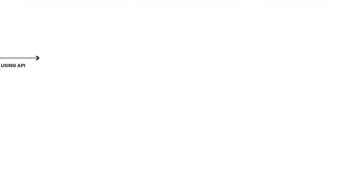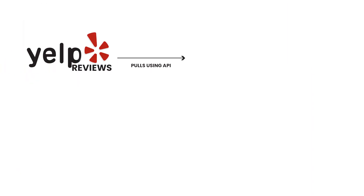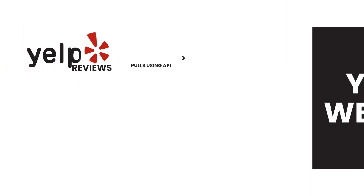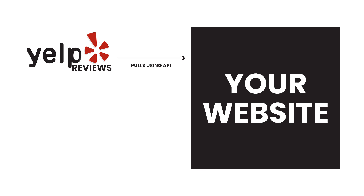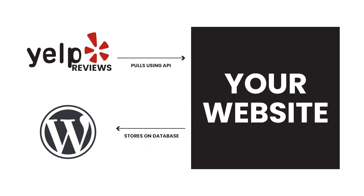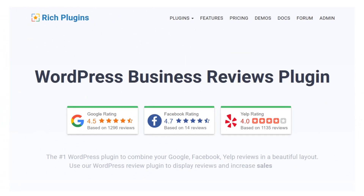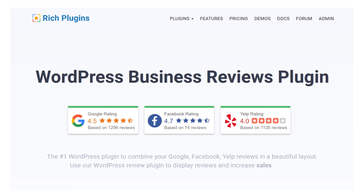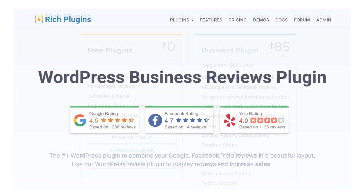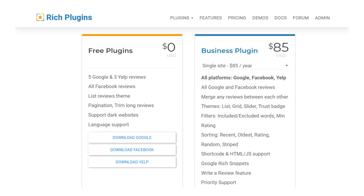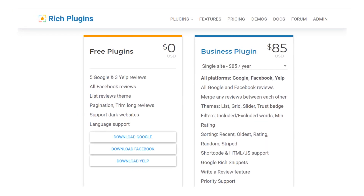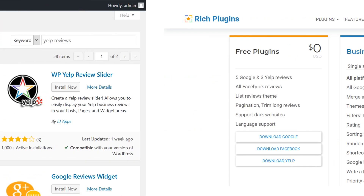The way the plugin works, it needs a Yelp API key to pull the information it needs from the platform. It then stores your latest reviews within the WordPress database so it doesn't have to pull them from Yelp each time someone visits your site. This plugin is free, and the developers also offer a premium option that includes Google and Facebook reviews for $85 per year.